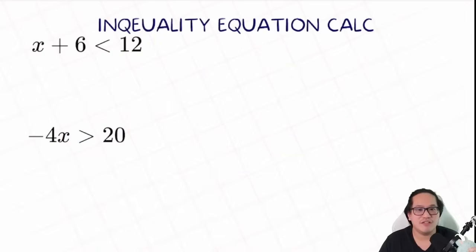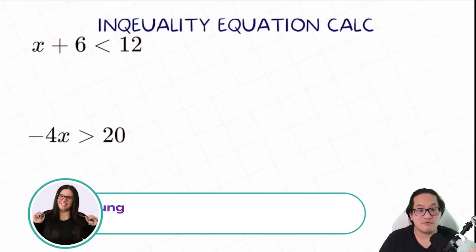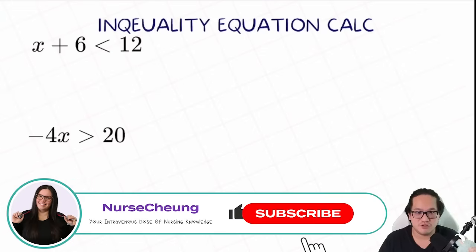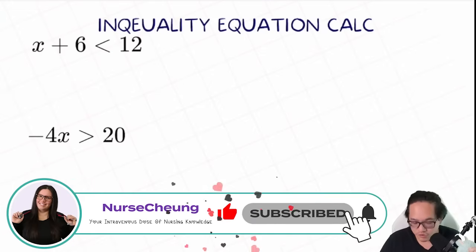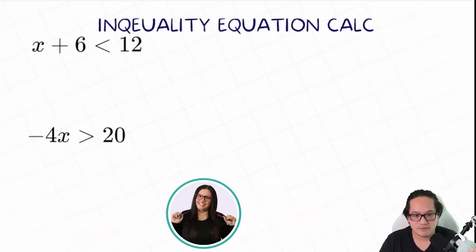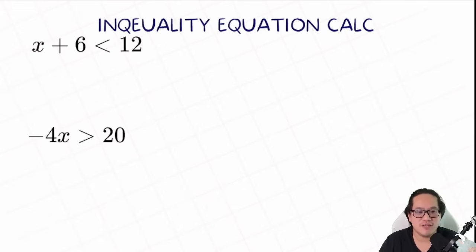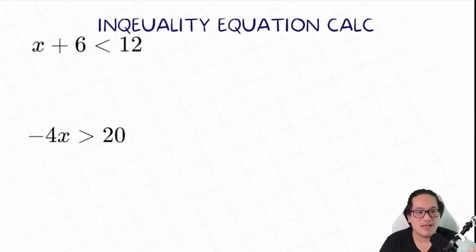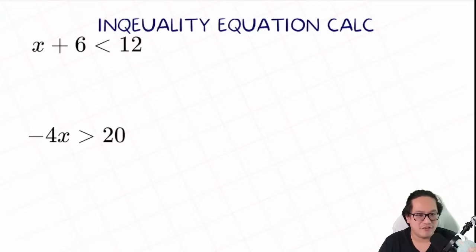There's only a couple things you need to know and learn about inequality equation calculation. First, they're very similar to equations with one variable. The only difference is the sign is a little different. The only other rule you need to know is every time when you divide or multiply by a negative number, your sign needs to get flipped around. I'll show you what that means later on. So let's do some practice together.